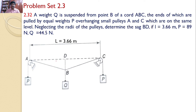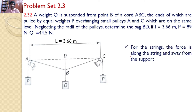There is a string A, B, C which passes over the pulleys A and C. At the two ends, P and P are connected. At point B, Q is attached. Because of this, a deflected position is shown in the figure. Our interest is to find how much is this sag distance. A key concept required to solve this problem: in any system consisting of strings, cords, or ropes, the force developed is along the string and it is directed away from the support.